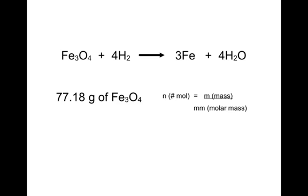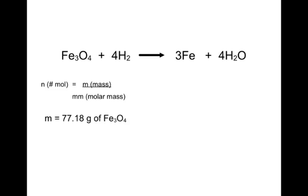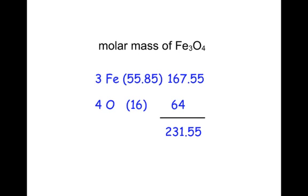You'll recall from our earlier studies that n, or the number of moles, is equal to the mass divided by the molar mass. So we need to know the molar mass of iron oxide. Iron oxide is made up of three iron atoms and four oxygen atoms. So three times 55.85 grams per mole would give us 167.55, and similarly four oxygens would have a mass of 64 grams per mole.